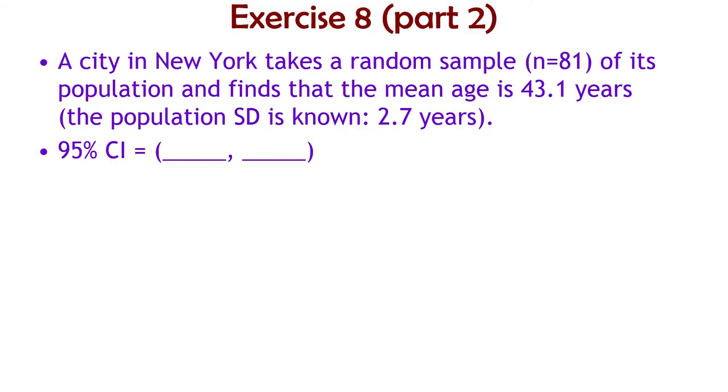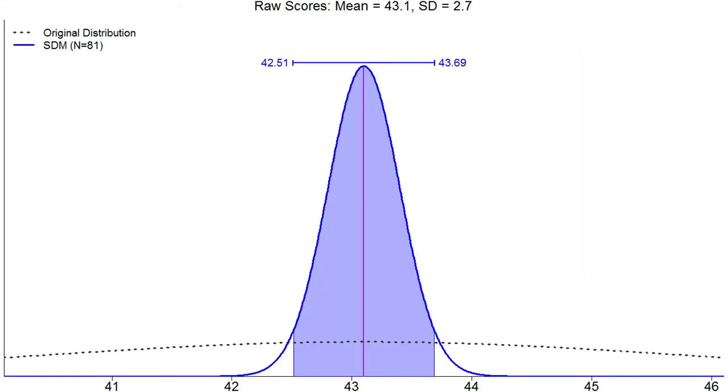Here's another exercise. Age. In this case, the sample is 81. So find a 95% confidence interval for the ages of the people in this city in New York. Going to the solution now. It should have something like this as long as I did the math right. 42.5 to 43.7.